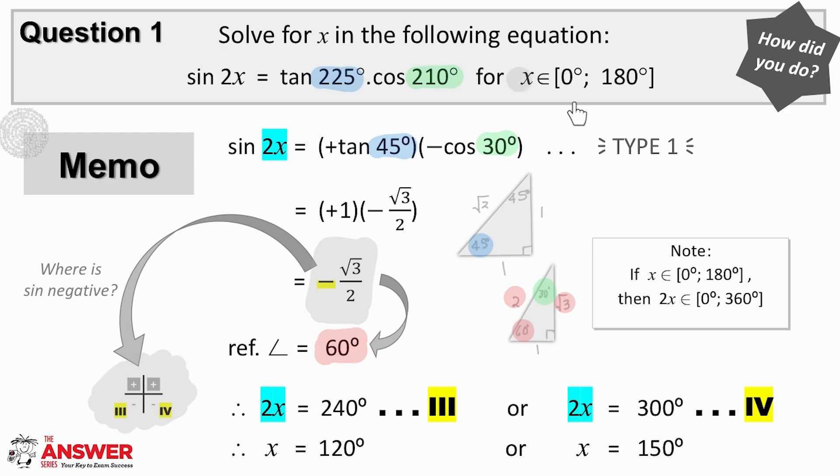And double-checking the interval in which our answers for x need to be given, it is useful to see that if x needs to lie between 0 and 180, then 2x can lie between 0 and 360. Our answers for x in this example are 120 or 150 degrees.